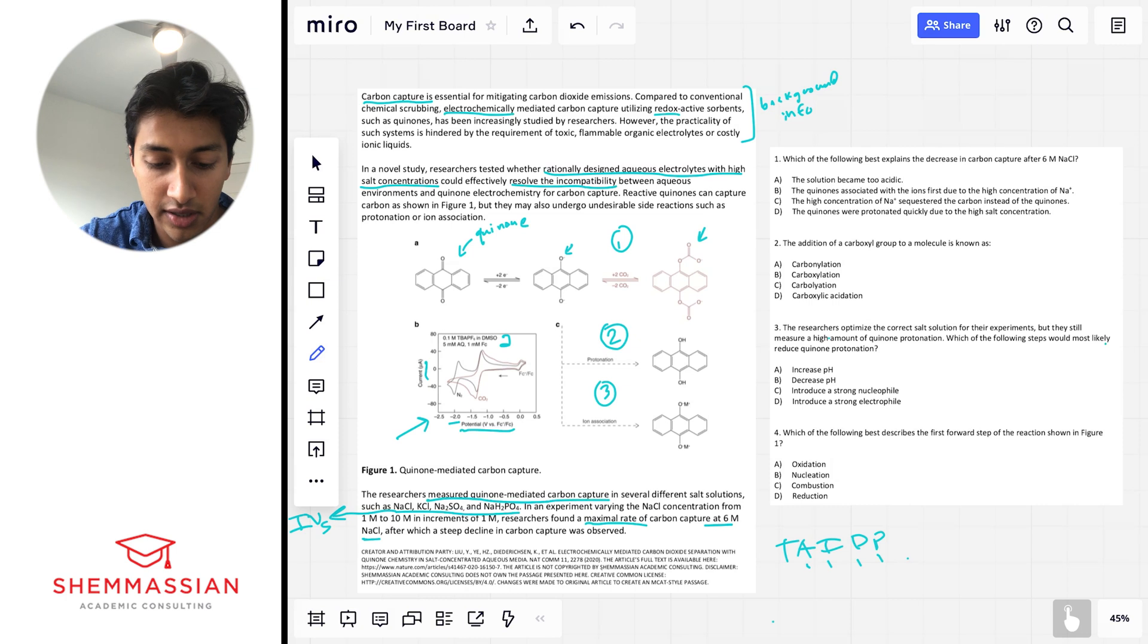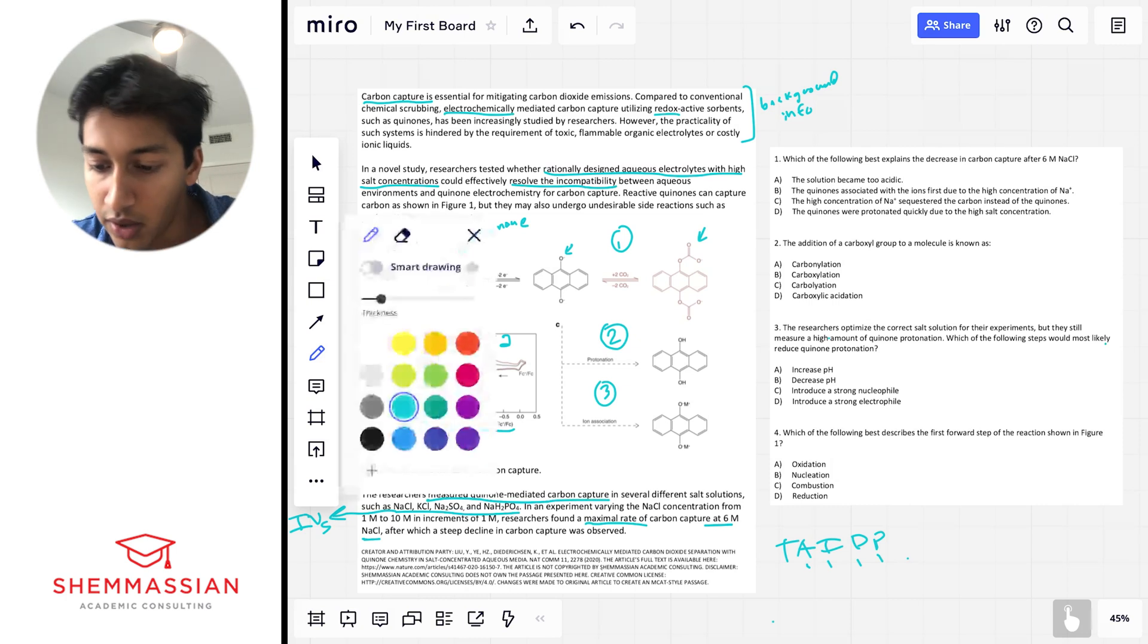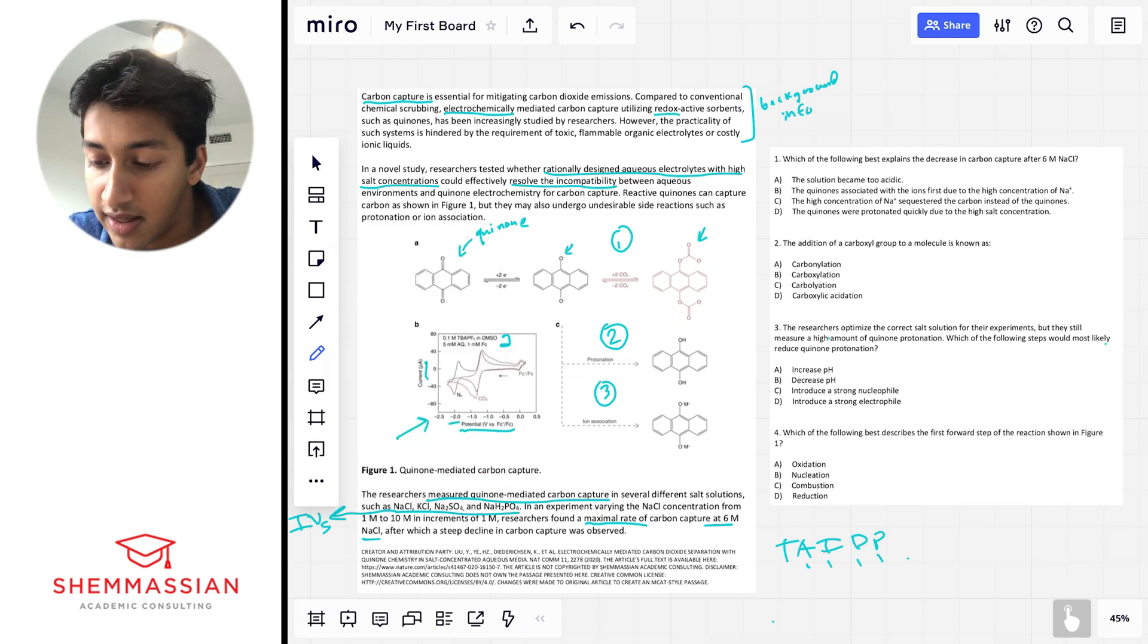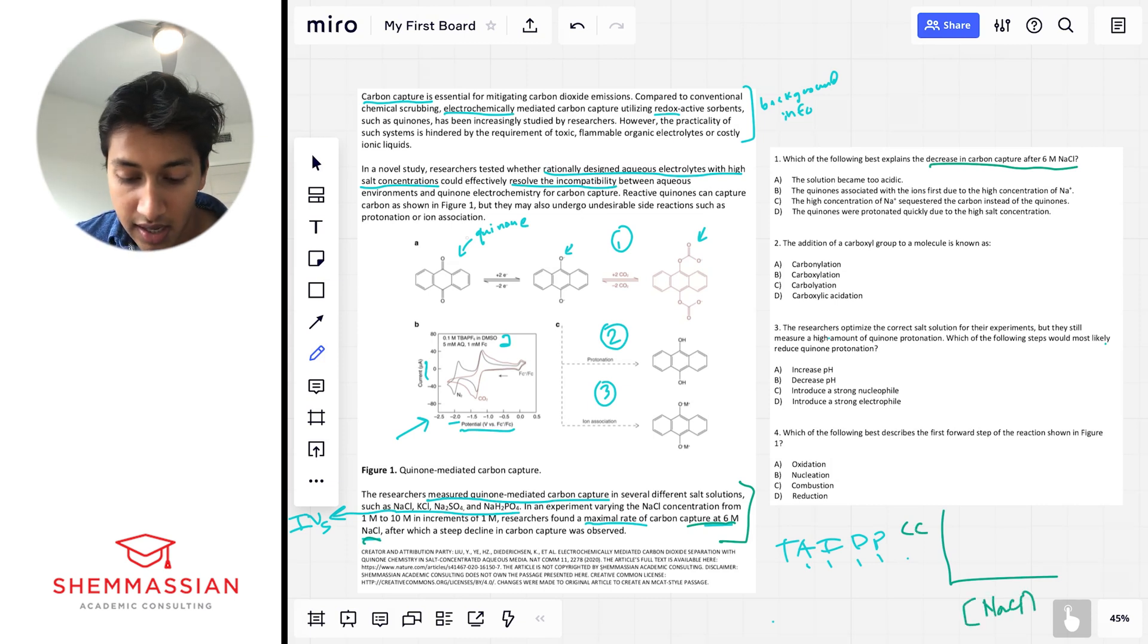Okay, so now let's move on to our questions. And I'll change the color here. Which of the following best explains the decrease in carbon capture after six molar sodium chloride. So let's go down here. Okay, right? This is where that comes up, right? They talked about this maximal rate of carbon capture at six molar NaCl. So let's draw our own graph real quick, right? So we have carbon capture on the y-axis, right? That's our dependent variable. And then we have sodium chloride concentration. And what they're telling us is it goes up something like this, right? Goes up, up, up, up, up, up. And then at six molar, there's a steep decline. So that's what we know so far. And now the question is asking us why? Why is it doing that? What information do we have from the passage that can tell us a little bit about what's happening here?